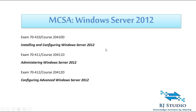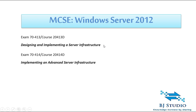If you want to upscale your skills, you have to enter into MCSE Windows Server 2012. We have two papers that are the follow-up of the above three: 7413 and 7414. In 7413 we'll be discussing designing and implementing a server infrastructure. In 7414 we'll look into implementing an advanced server infrastructure.